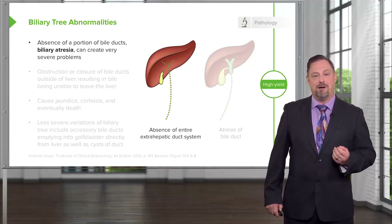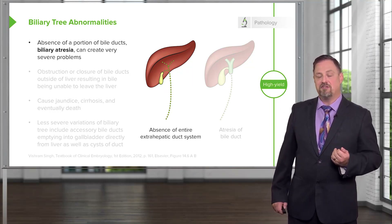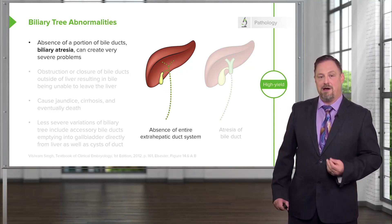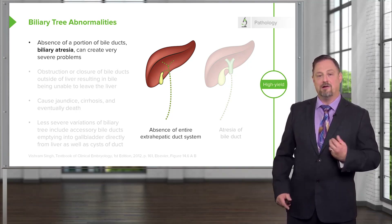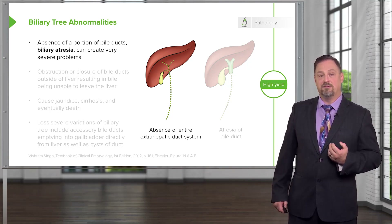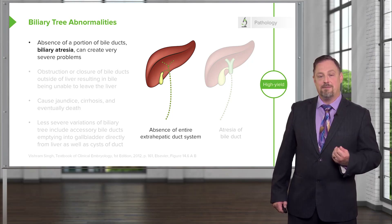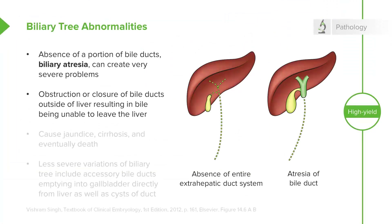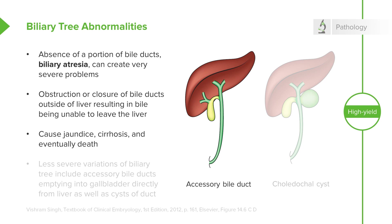Problems with bile drainage from the liver can be very serious. The liver continuously produces bile, and if it cannot drain to the common bile duct, intestine, or gallbladder, it backs up into the vascular system causing jaundice, liver damage, and eventual death. Absence of the entire biliary system — biliary atresia — causes immediate jaundice in an infant. Jaundice is common in newborns and often resolves, but the cause must be properly identified. Partial atresia of the bile duct can also occur, leading to jaundice, cirrhosis, and death.